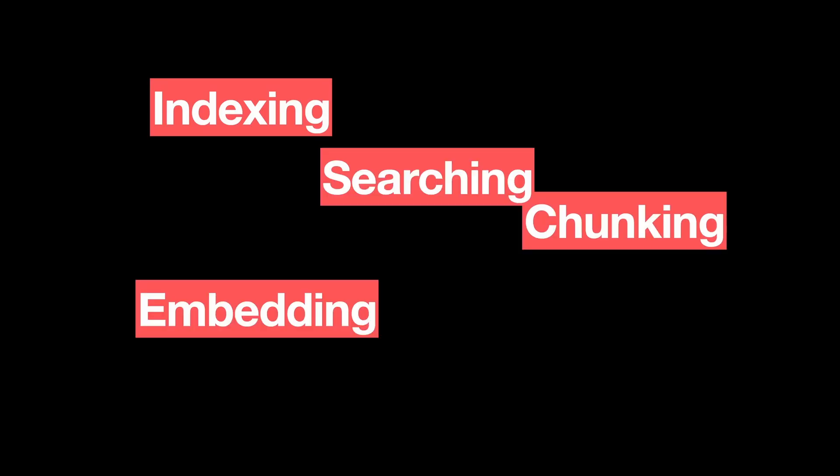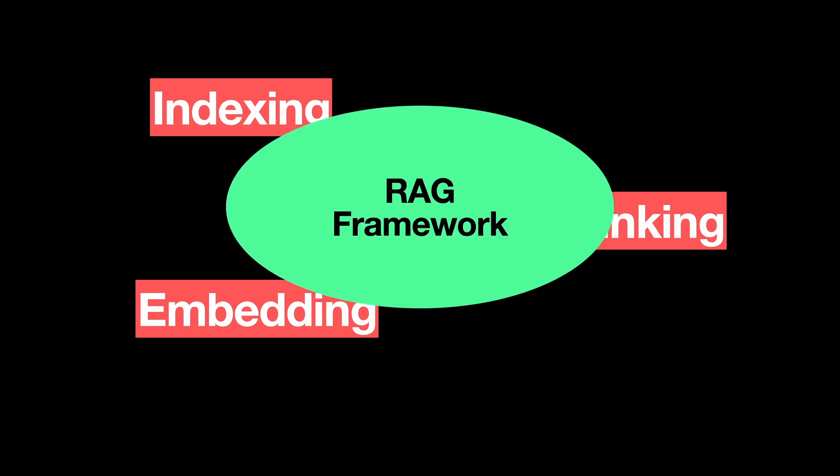Obviously we oversimplified what goes on under the hood. For example, there's indexing, embedding, chunking, searching, and many more steps going on. Putting them all together forms the RAG framework. Let's dig deeper into the RAG framework and understand each of the elements now.